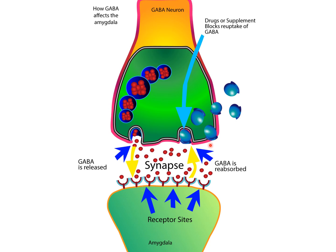So this is how GABA affects the amygdala. What you need to know is that GABA is inhibitory — when GABA binds to the GABA receptor, it opens up the chloride ion channel and inhibits the activity of the amygdala, therefore decreasing anxiety.